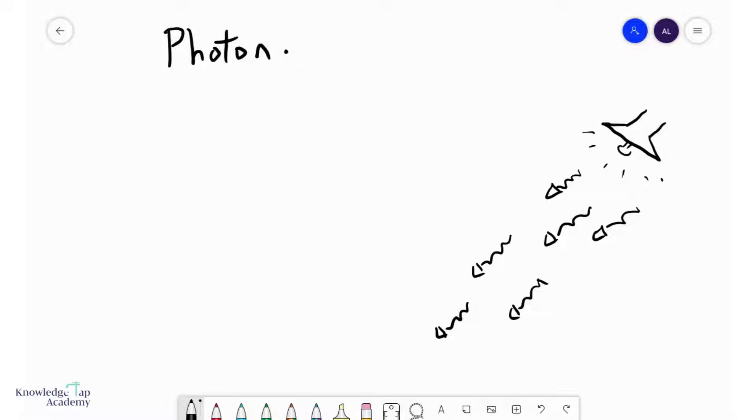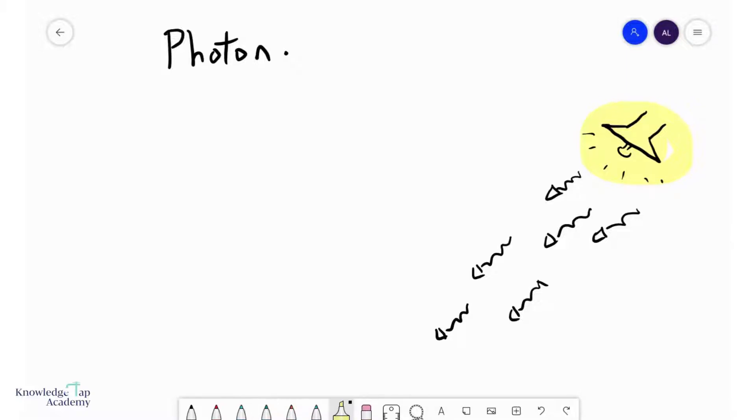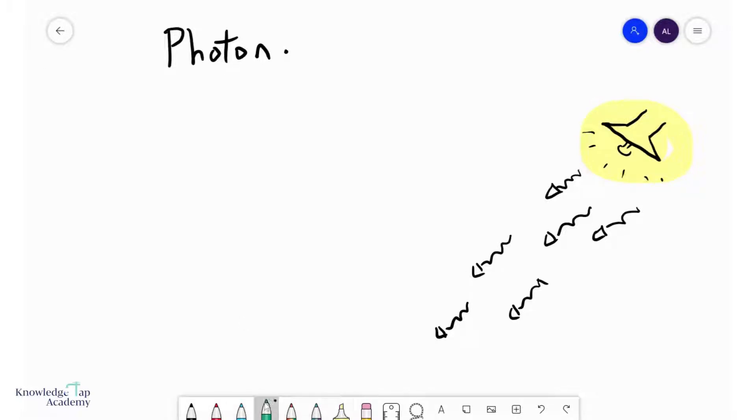So what exactly is a photon? Consider a source of electromagnetic radiation over here, like this light. And so what we are used to believing is that something like EM radiation can be represented as a wave.